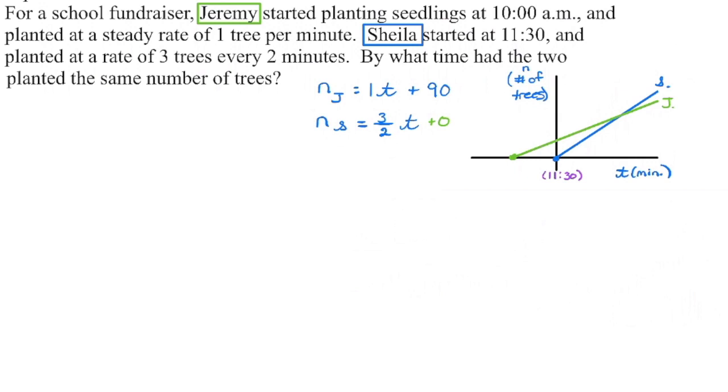Once we have our axes labeled, notice that time is in minutes. I indicated that this is going to be 11:30. If I put 11:30 right here, that's the time that Sheila starts. So when she begins, she hasn't planted any trees. She's planting at a rate of three trees every two minutes. That becomes our slope. She's going to plant three trees in two minutes, up three trees in two minutes and so on.